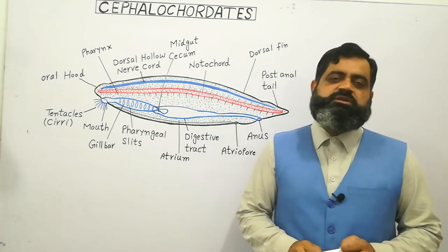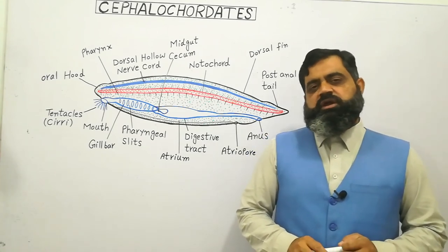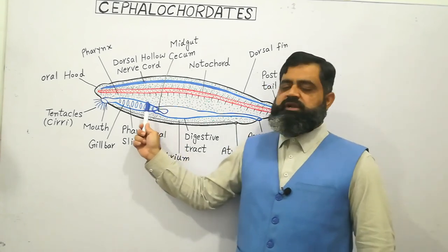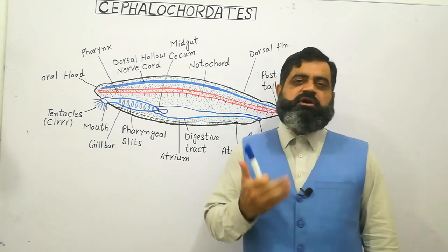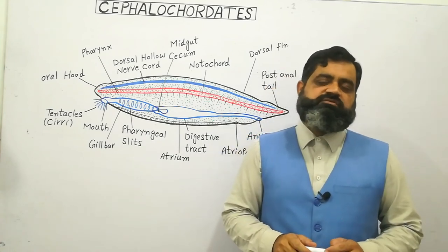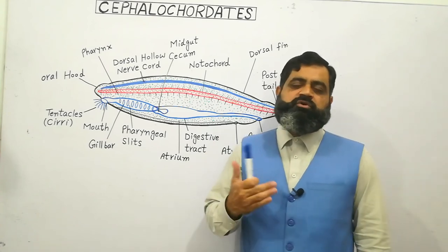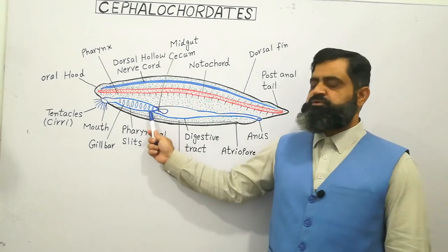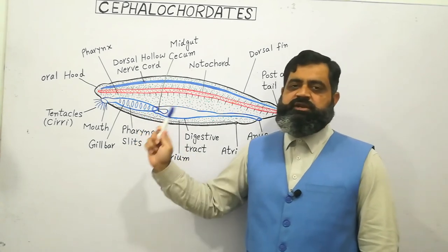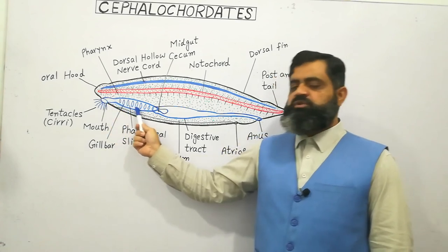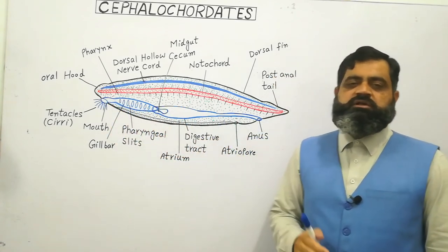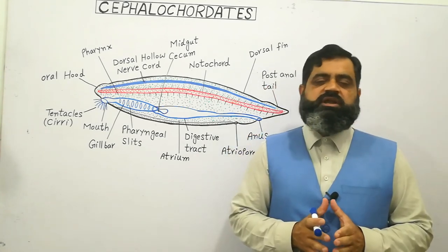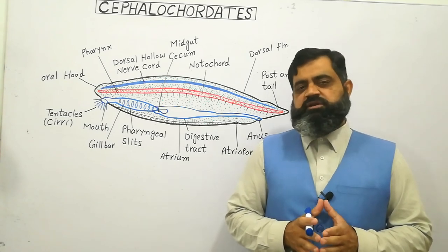If we look at the reproduction of these animals, they are dioecious, meaning male and female are separate. The body wall of the atrium projects slightly outward and forms gonads — male gonads are called testes and female gonads are called ovaries. During oogenesis and spermatogenesis, eggs and sperms are produced by the gonads, which are released into the atrium. Water entering from the mouth into the atrium carries the gametes out through the atriopore, where fertilization takes place in the water and a larva is produced.